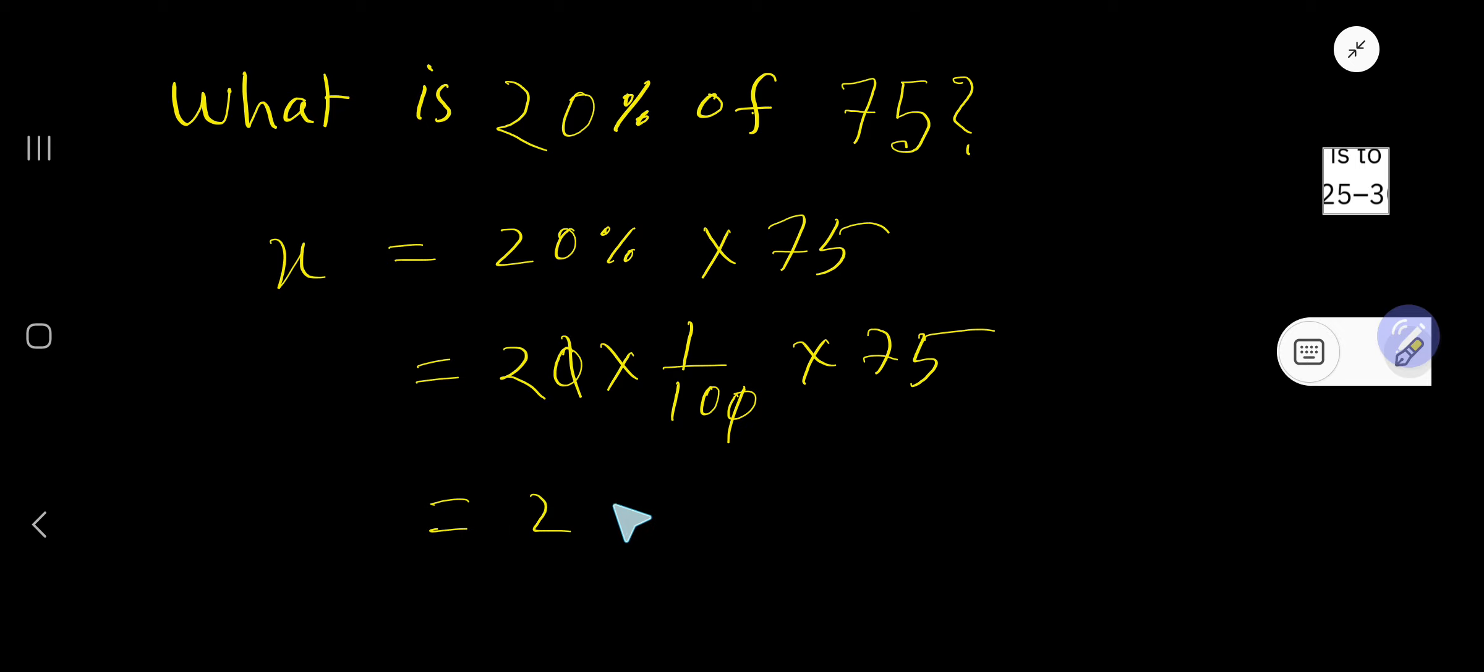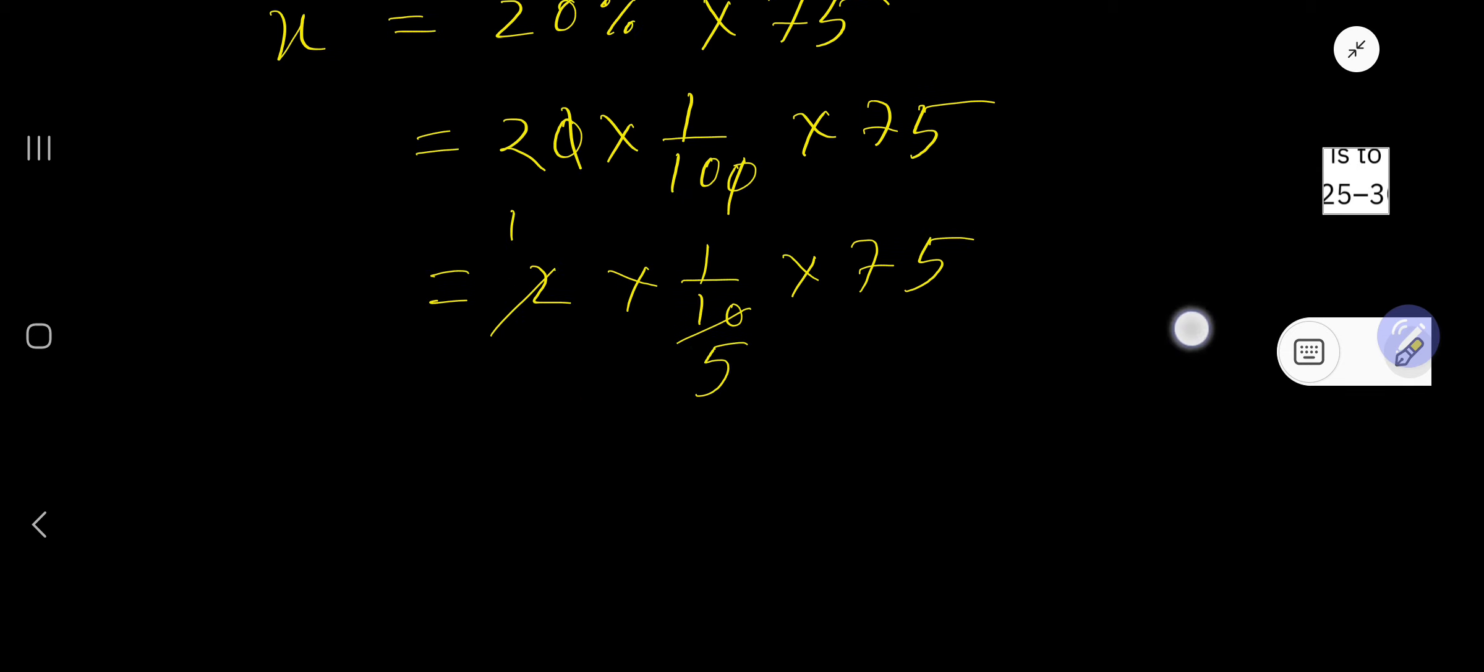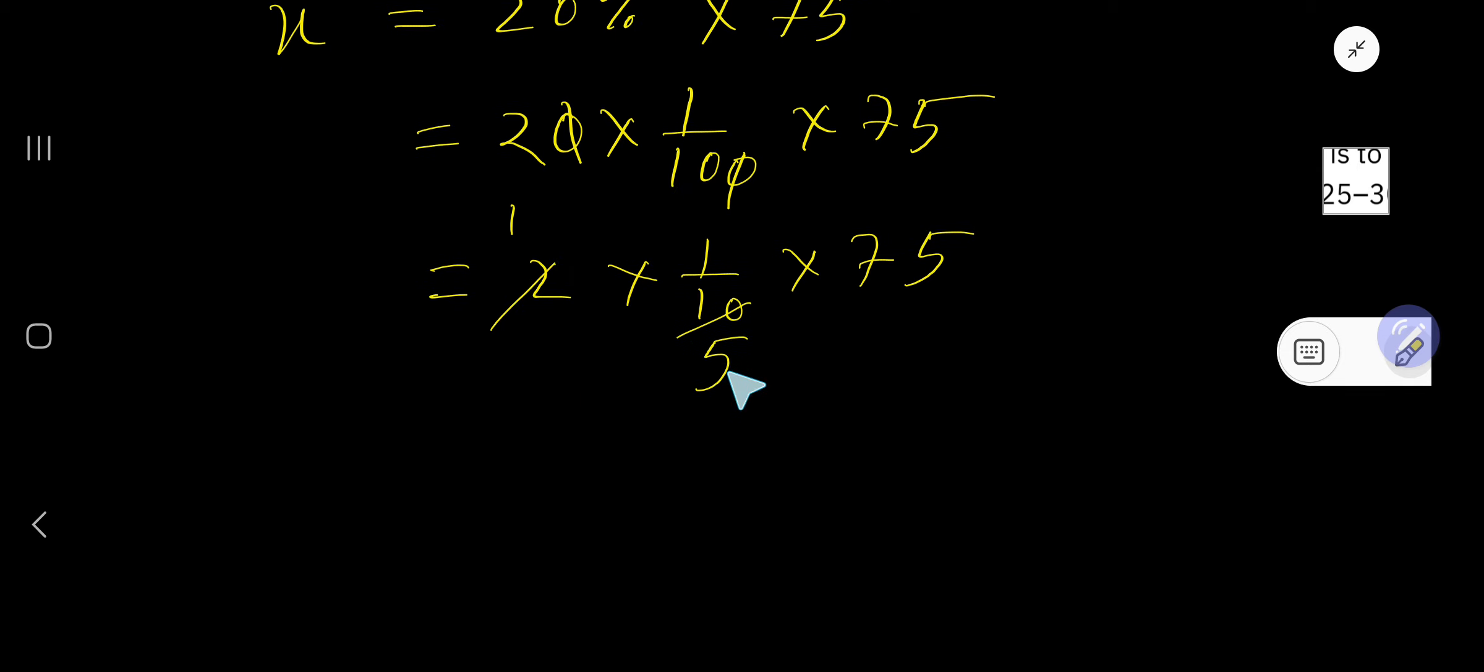So we are getting 2 times 1 over 10 times 75. Look, this 2 is divisible by 2. This 10 is also divisible by 2. If you divide this 2 by 2 you will get 1. If you divide this 10 by 2 you will get 5.